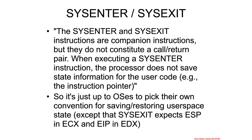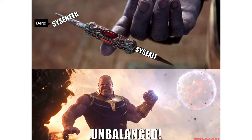There's an interesting point in the manual: sysenter and sysexit instructions are companion instructions, but they do not constitute a call/return pair. When executing sysenter, the processor does not save state information for the user code — for instance, the instruction pointer. The instruction pointer gets restored from whatever is sitting in EDX, so it's not explicitly saved. Someone somewhere needs to save it — that ultimately becomes up to the operating system to figure out its own convention for saving and restoring state. So unlike syscall and sysret, these are unbalanced.